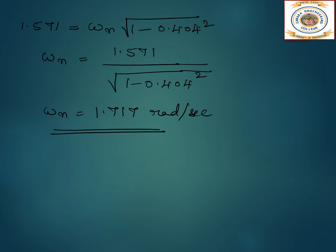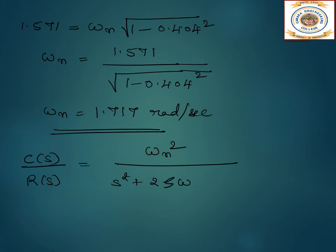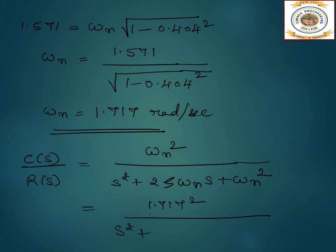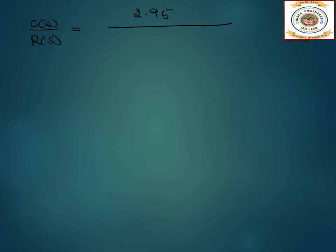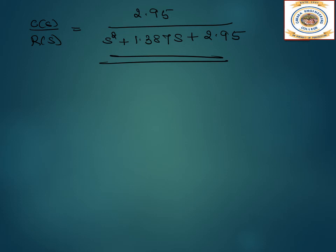To find the closed loop transfer function, substitute into the standard second order form: ωₙ²/[s² + 2ζωₙs + ωₙ²]. With ωₙ = 1.717 and ζ = 0.404: C(s)/R(s) = 1.717²/[s² + 2(0.404)(1.717)s + 1.717²] = 2.95/[s² + 1.387s + 2.95]. This is the closed loop transfer function.